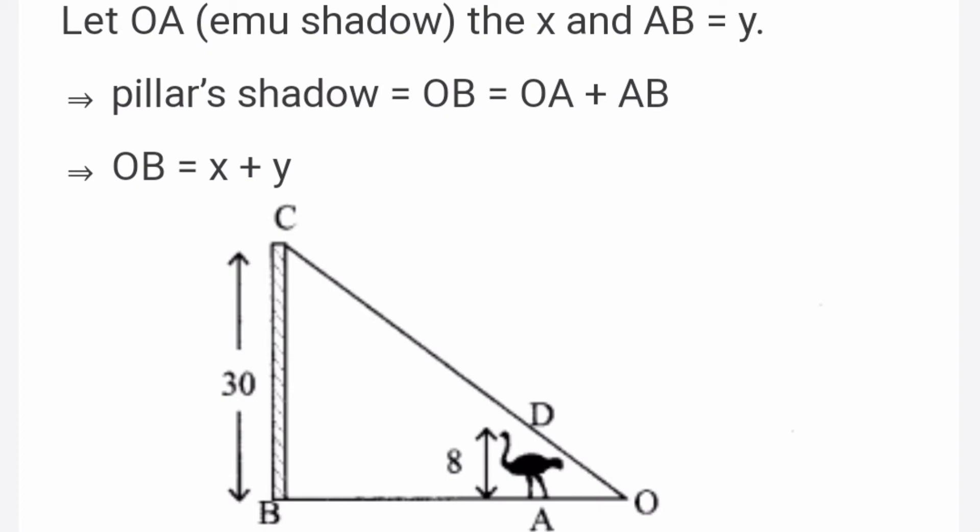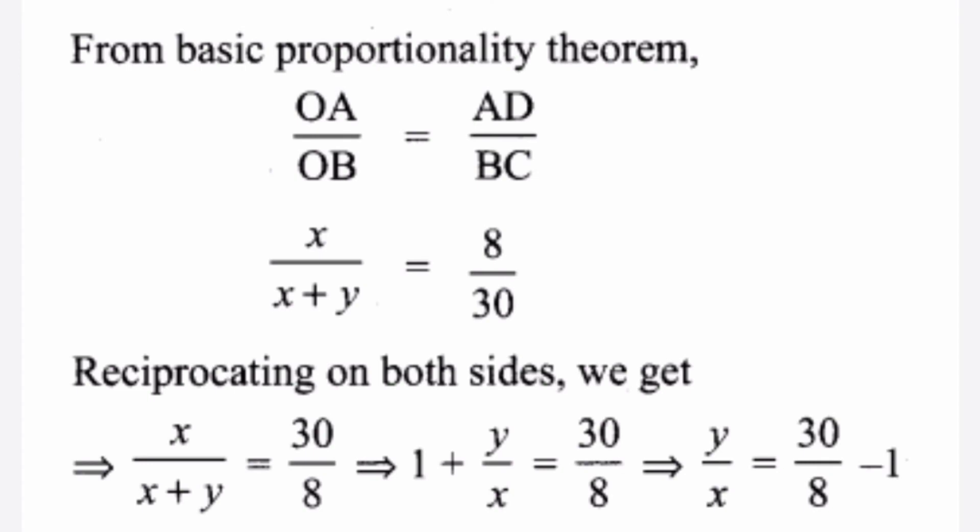The height of the pillar is 30 feet in the diagram. From basic proportionality theorem, OA by OB is equal to AD by BC. So x by x plus y is equal to 8 by 30.